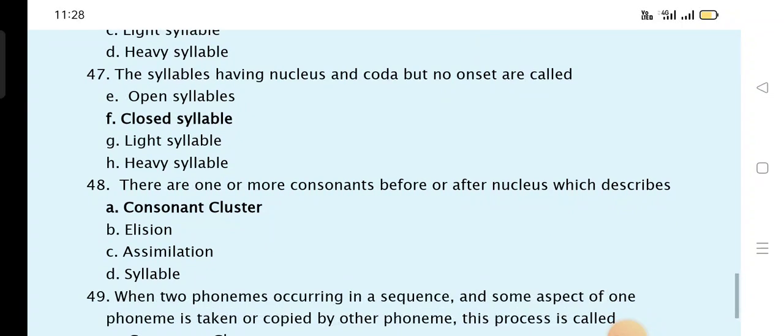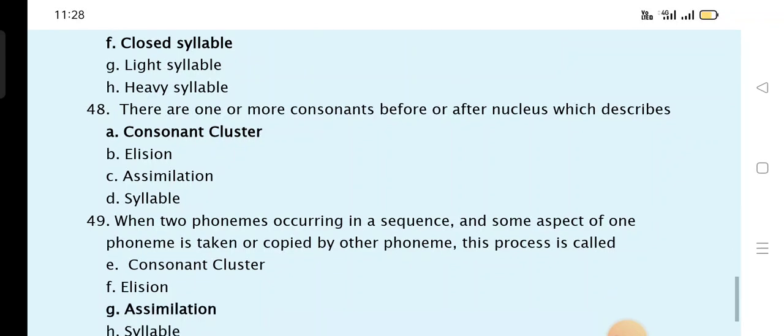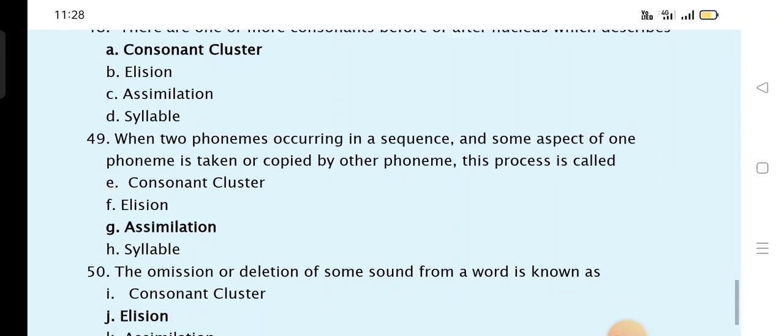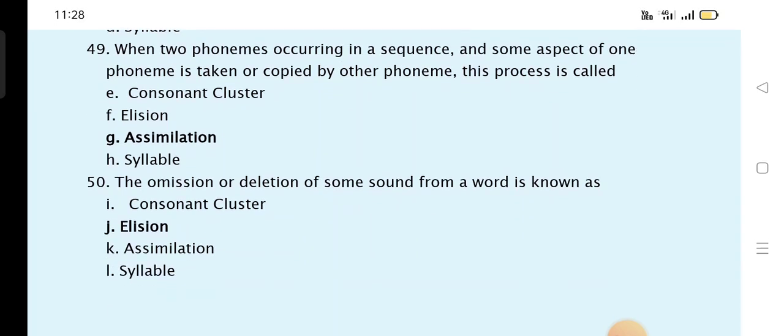There are one or more consonants before or after nucleus which describes consonant cluster. When two phonemes occurring in a sequence and some aspect of one phoneme is taken or copied by other phoneme, this process is called assimilation. The omission or deletion of some sound from a word is known as elision.